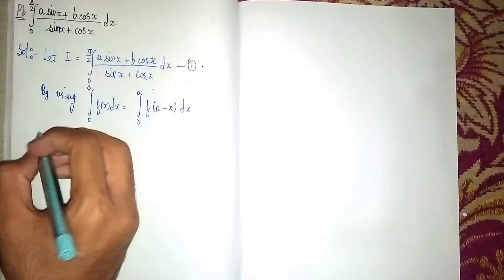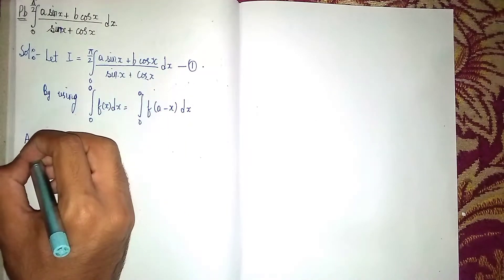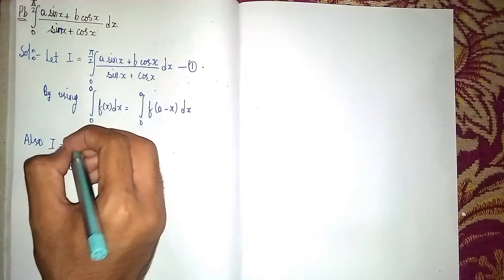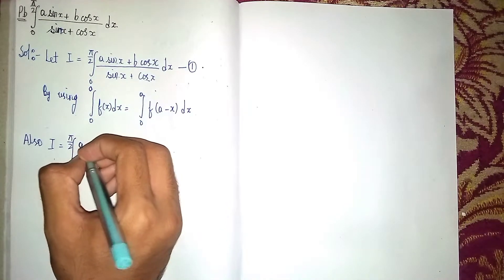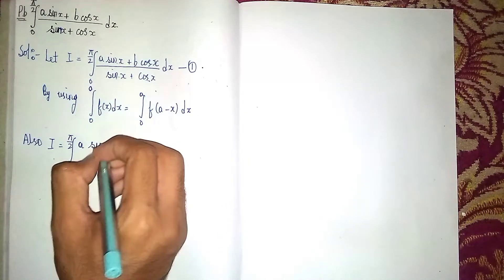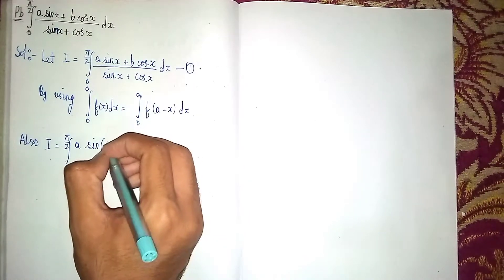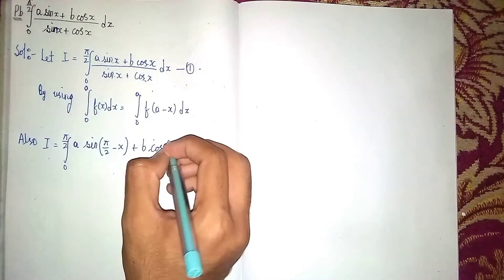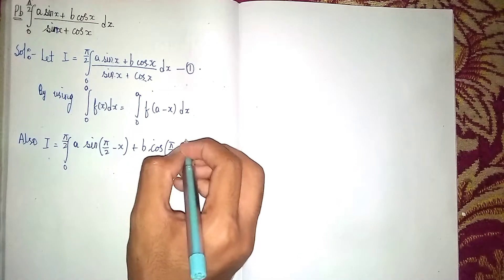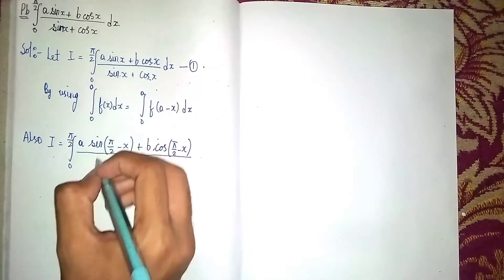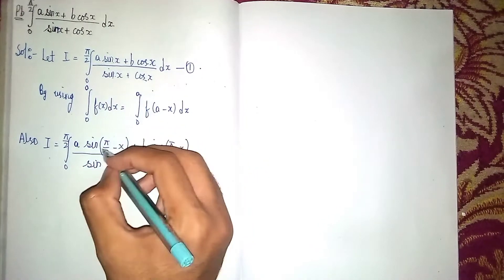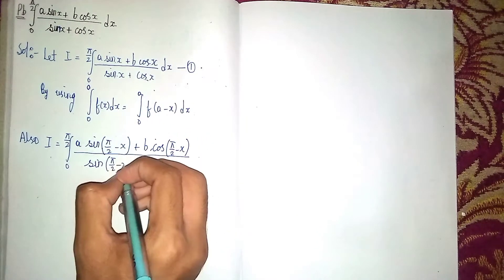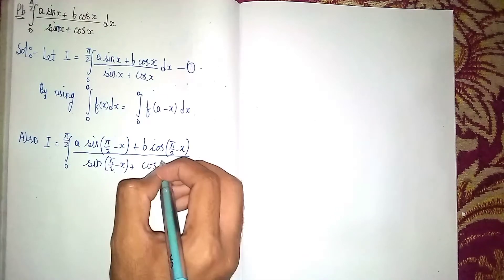So I is also equal to the integral from 0 to π/2 of [a·sin(π/2 - x) + b·cos(π/2 - x)] divided by [sin(π/2 - x) + cos(π/2 - x)] dx. We are applying the property to every part of the expression.